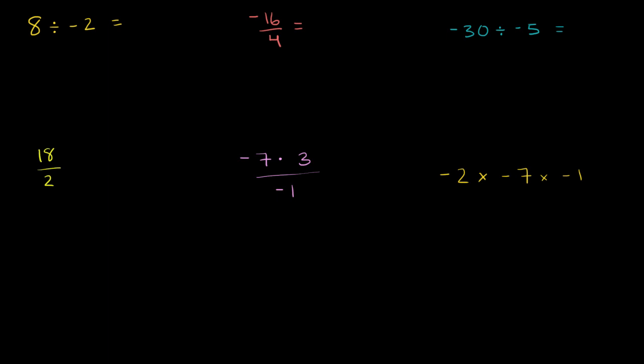Now that we know a little bit about multiplying positive and negative numbers, let's think about how we can divide them. What you'll see is that it's actually a very similar methodology. If both are positive, you will get a positive answer. If one is negative but not both, you're going to get a negative answer. And if both are negative, they will cancel out and you will get a positive answer.